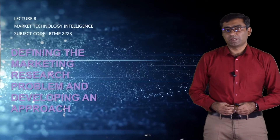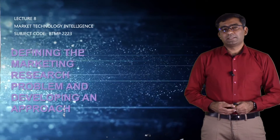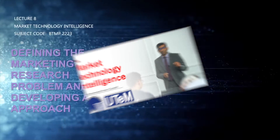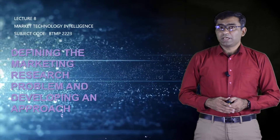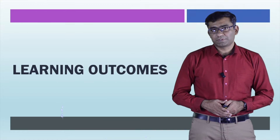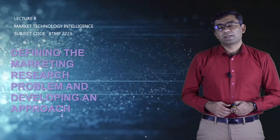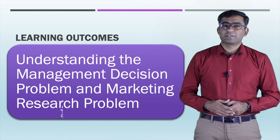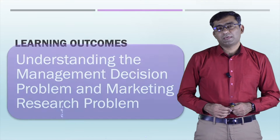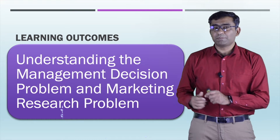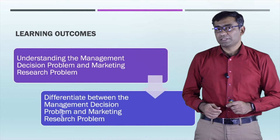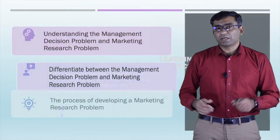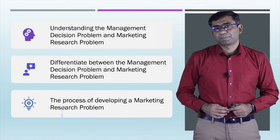Let's start today's lecture. We have three basic learning outcomes: first, we will try to understand what is the decision problem for management and what is the research problem for marketing. Second, we will differentiate between the management decision problem and the marketing research problem. Third, we will formulate a research problem related to marketing.